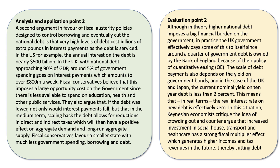This means that in real terms — taking off inflation — the real interest rate on debt is effectively zero. In this situation, Keynesian economists would argue that crowding out is unlikely, and they would counter-argue that this is the time government should be increasing borrowing and investment in social housing, transport, and healthcare, which in theory could have a multiplier effect that generates higher tax revenues and therefore cuts the debt. This is sometimes known as crowding in — the opposite of crowding out.